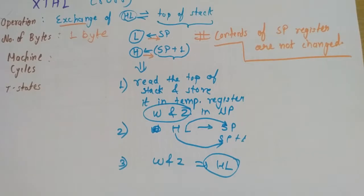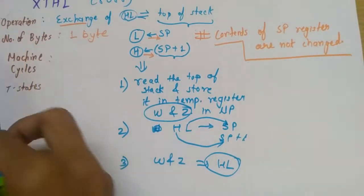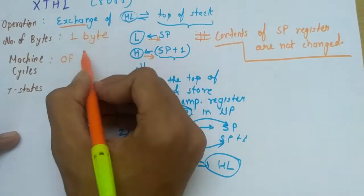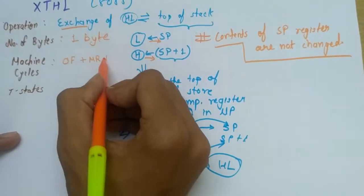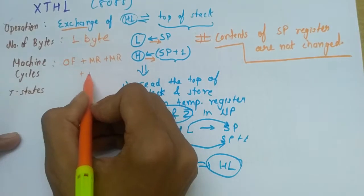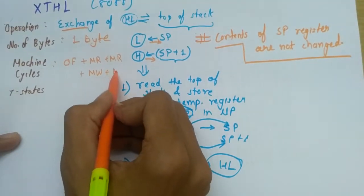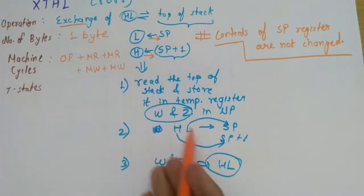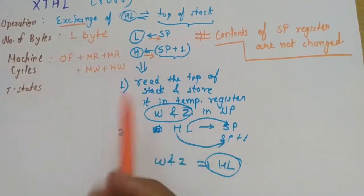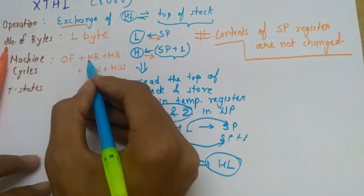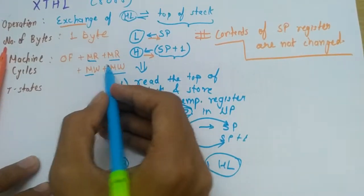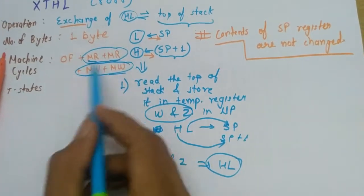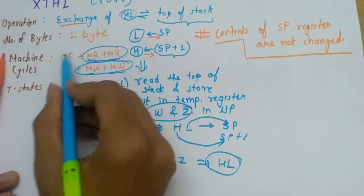Now let's talk about number of machine cycles. Obviously, first will be opcode fetch, then we have to read the top of the stack, so two times memory read, and then memory write. This memory write is also for the stack pointer only, since HL register pair and W and Z are inside the microprocessor, so no memory read or write cycle is needed for them. All these machine cycles, the read and write cycles, are all for the stack pointers.